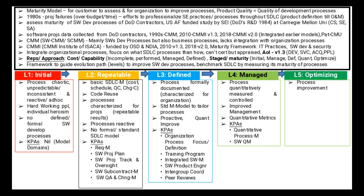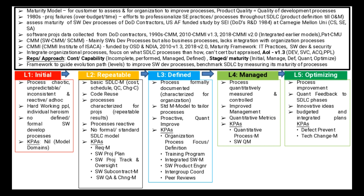At Level 5, the Optimizing stage, processes are continuously improved by getting quantitative feedback back into the SDLC phases, and procedures are improved through innovative ideas. Budgeting and integrated plans are in place. The key process areas at this optimizing stage are: Defect Prevention with regards to software errors or coding errors, Technology Change Management, and Process Change Management.